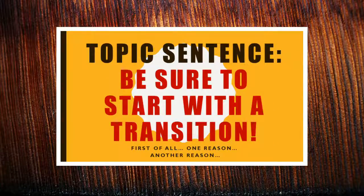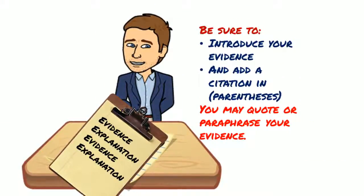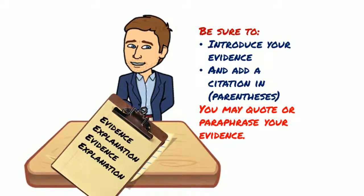For your topic sentence, you're going to want to be sure to start with a transition. Examples include 'first of all' or 'one reason for.' For follow-up paragraphs you might use 'another reason.' After you've done this, you'll need to restate your thesis statement — this is your topic sentence.